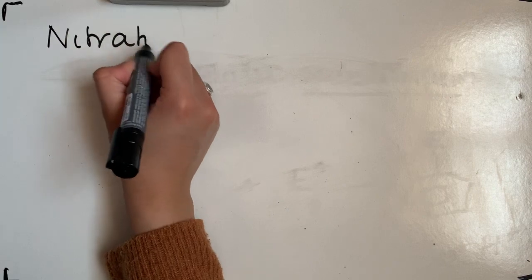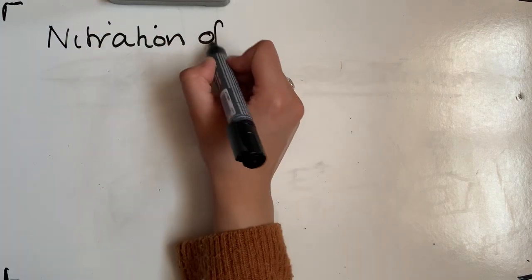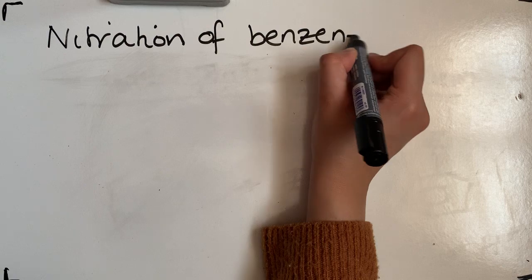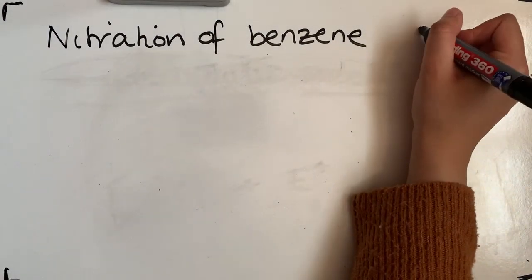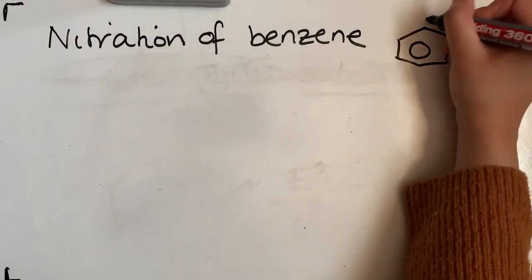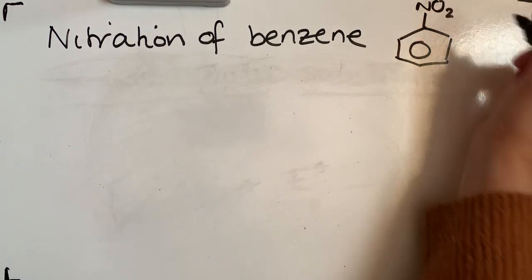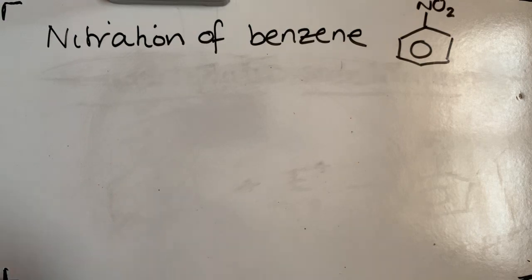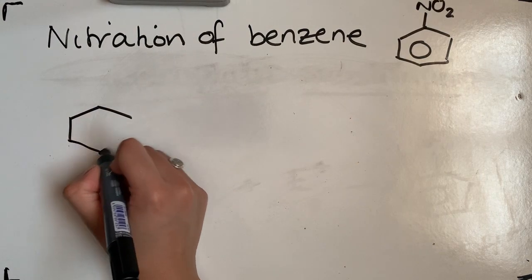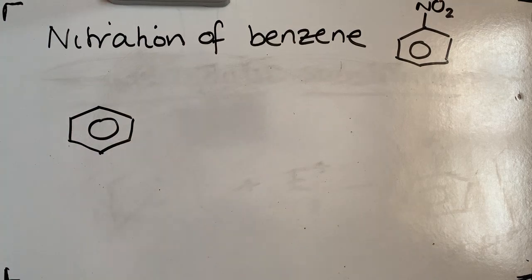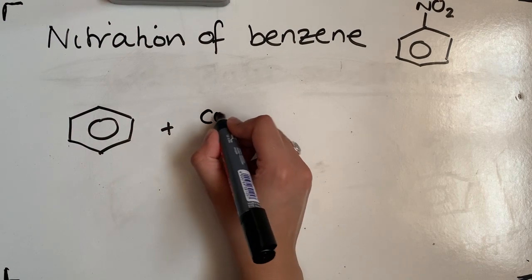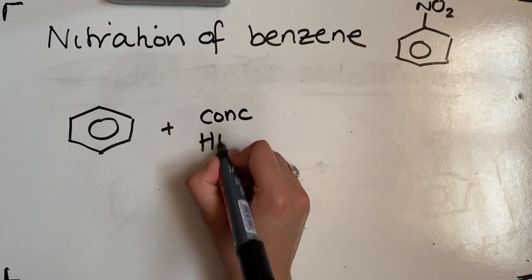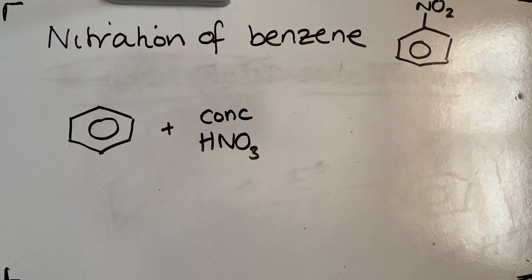The first type of reaction we need to look at is the nitration of benzene. In this reaction, we form nitrobenzene, made from benzene. For the overall reaction, starting with benzene, we need to react it with concentrated nitric acid — it's very important that it is concentrated nitric acid.